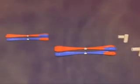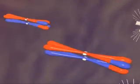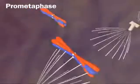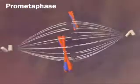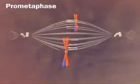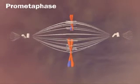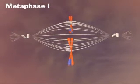Prometaphase begins as the nuclear envelope disappears and the spindle invades the nuclear space. Pairs of homologous chromosomes move together to the equatorial plate for metaphase I.